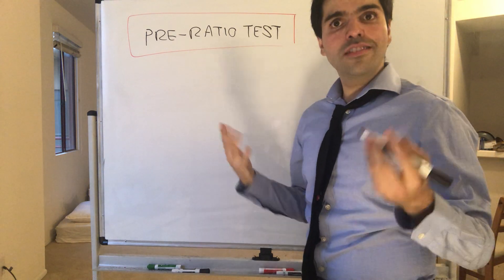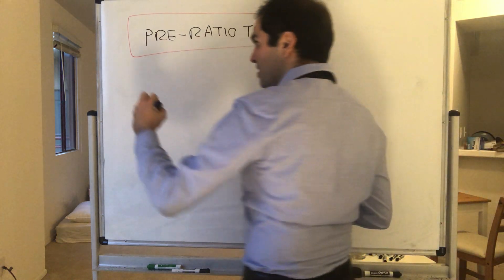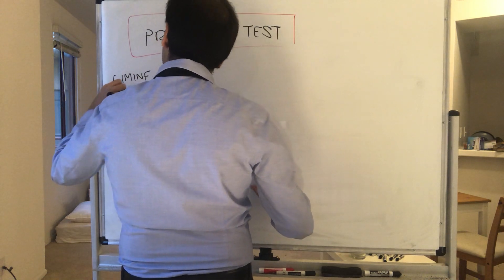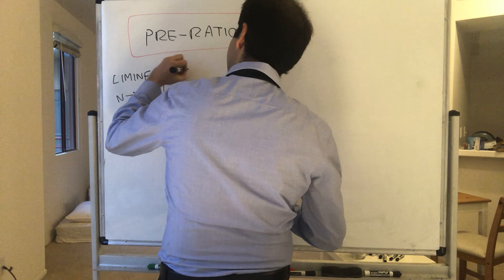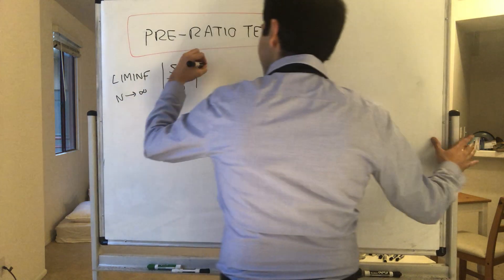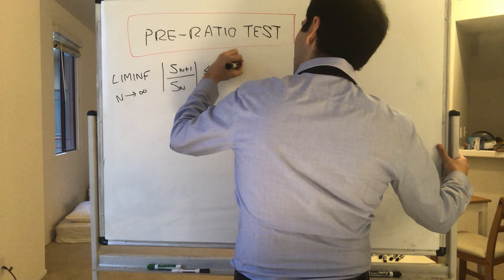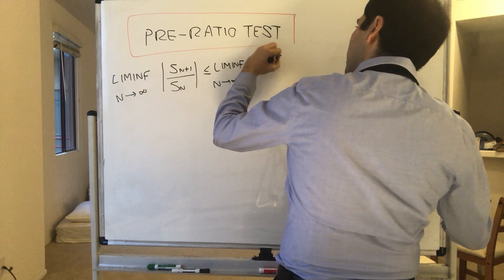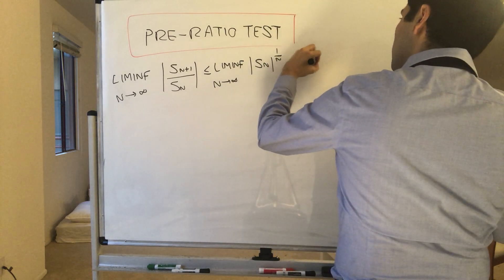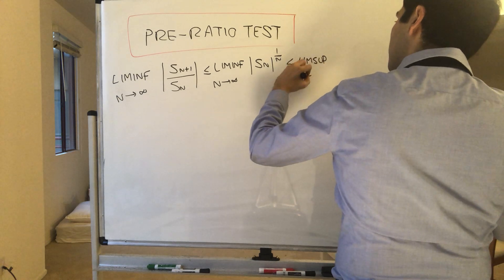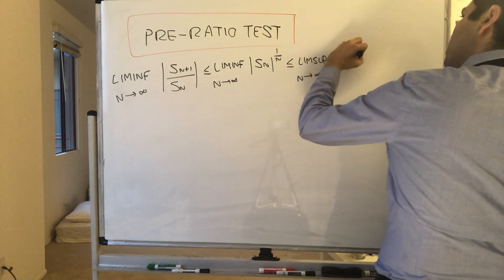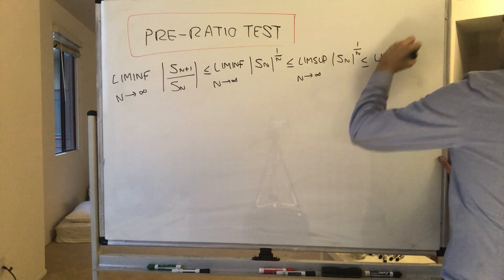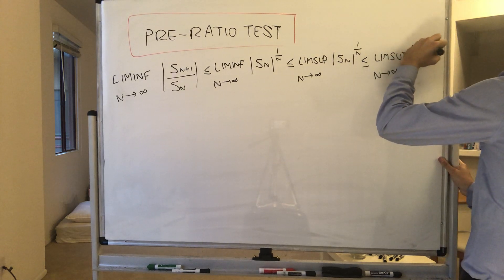Consider a sequence S_n with nonzero terms. Then we have the following identity: the liminf of the ratio part, S_{n+1} over S_n, is less than or equal to the liminf of the root part — S_n to the 1 over n — which is less than or equal to the limsup of the root part, which is less than or equal to the limsup of the ratio part, S_{n+1} over S_n.